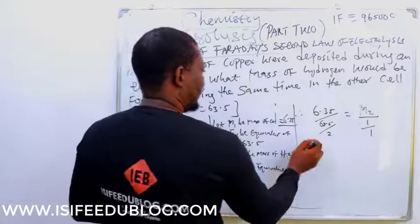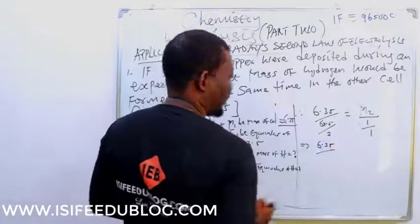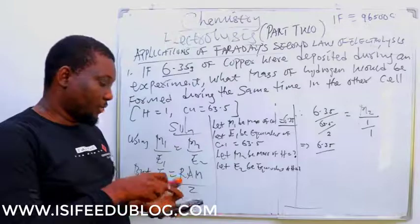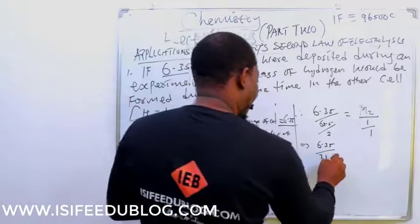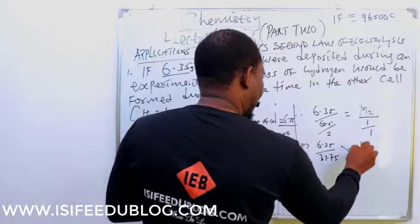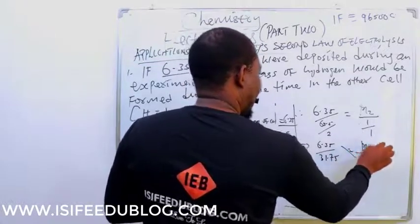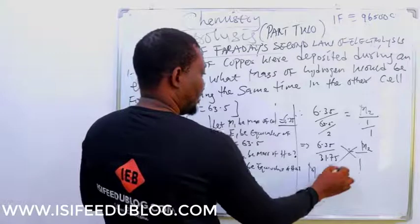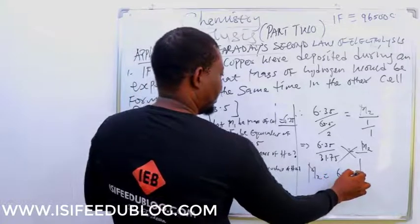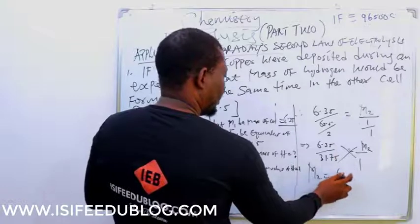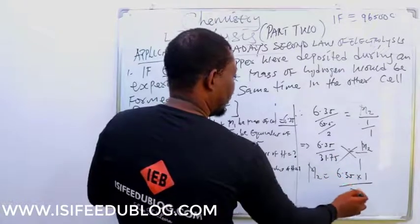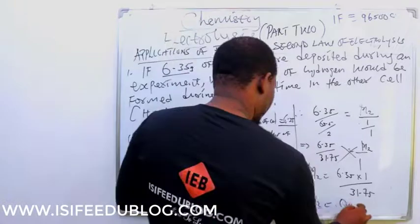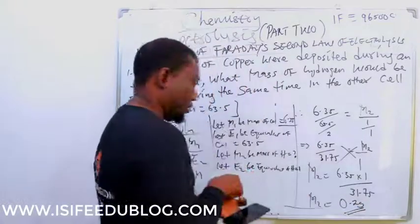So, we now have this implies that 6.35 over 63.5 divided by 2, I have 31.75. So, let's cross-multiply. What's our M2 now? M2 is 6.35 times 1 over 31.75. M2, that's mass of hydrogen, that would be 0.2 gram. That's the answer.